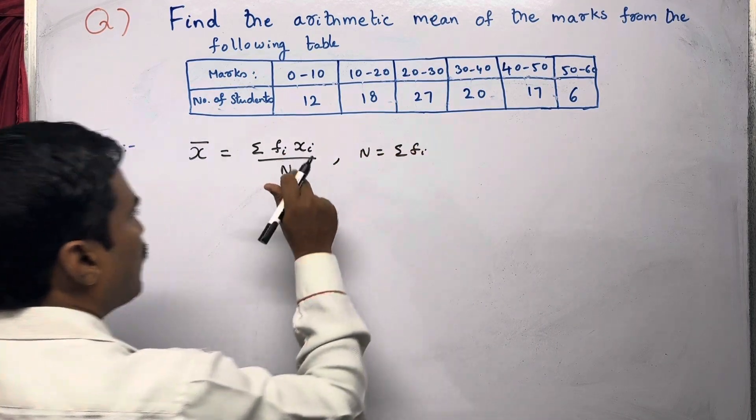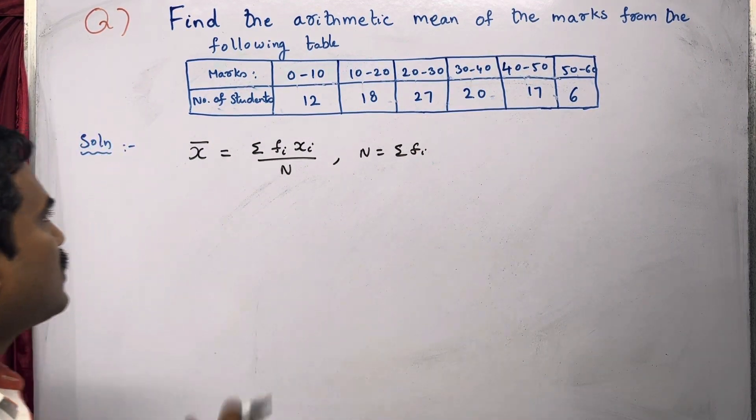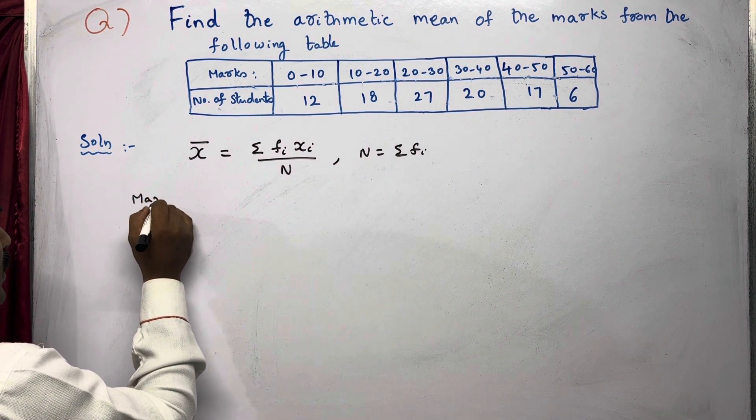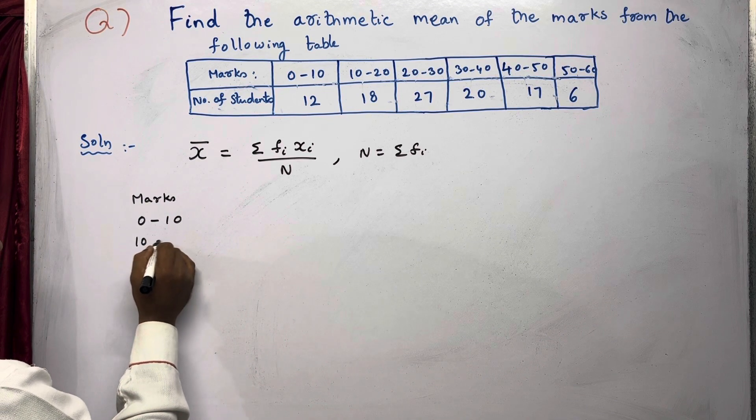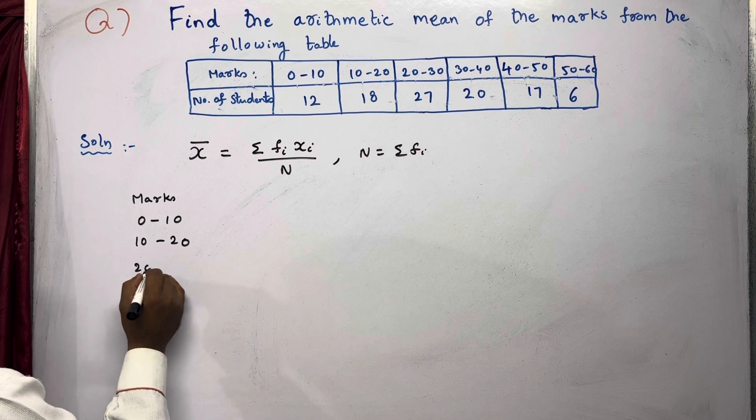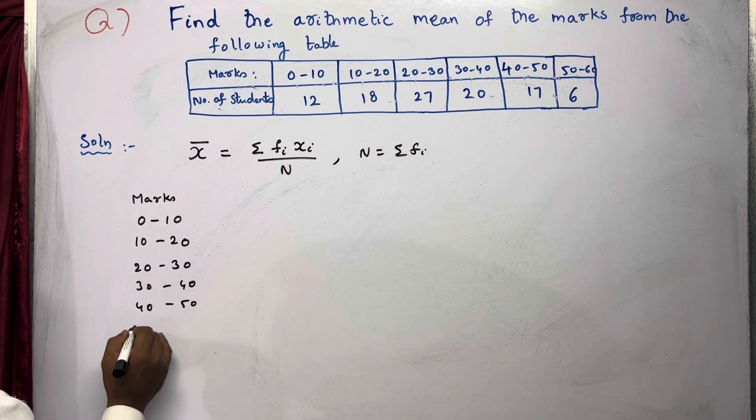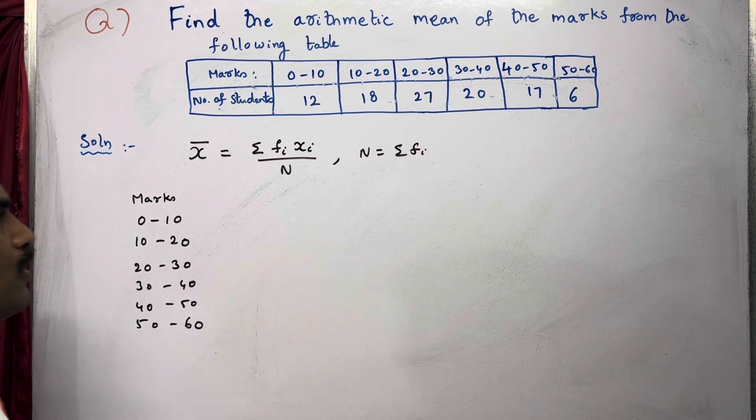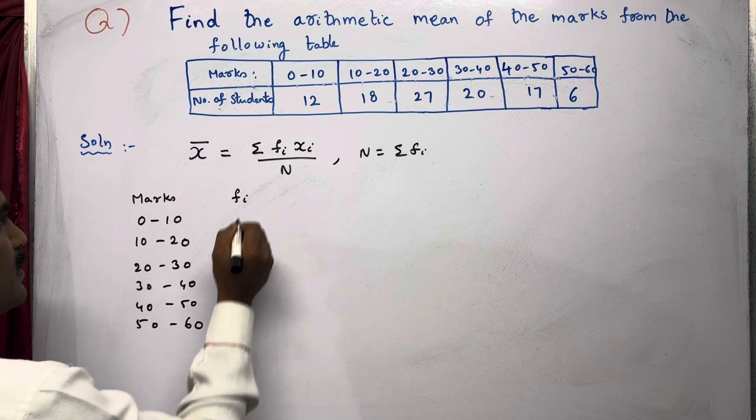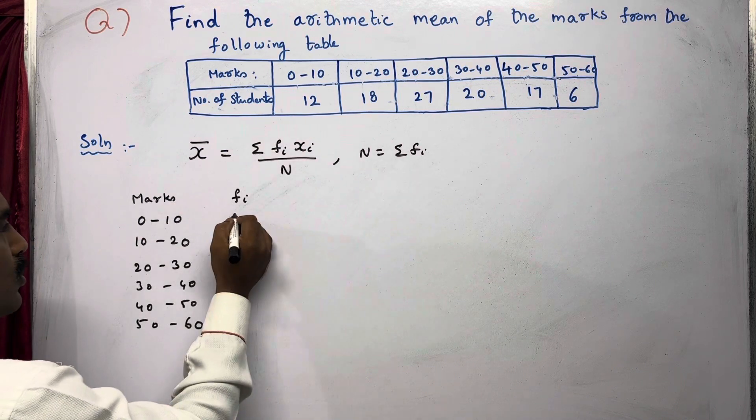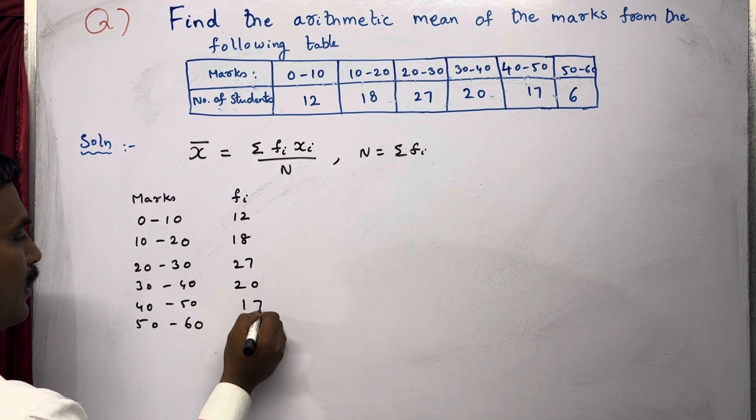Here, Fi means the frequency, that is the number of students. Now we'll form a table. First, we'll write marks. Since they are given as intervals: 0 to 10, then 10 to 20, then 20 to 30, 30 to 40, 40 to 50, then 50 to 60. Now they have given number of students also, that is we'll take as Fi (frequency). Corresponding to these intervals: 12, 18, 27, 20, 17, and 6.